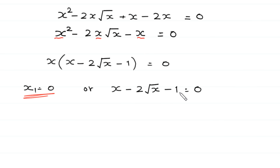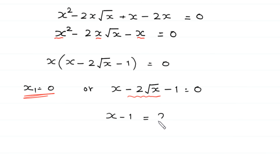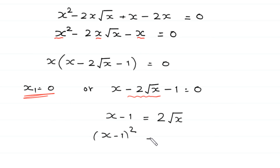Now, to find the other values of x, we solve the equation x minus 2 times square root of x minus 1 equals 0. We move negative 2 times square root of x to the right side. The left side becomes x minus 1, equal to positive 2 times square root of x. From here we take the square of both sides: x minus 1 whole squared is equal to 2 times square root of x, whole squared.